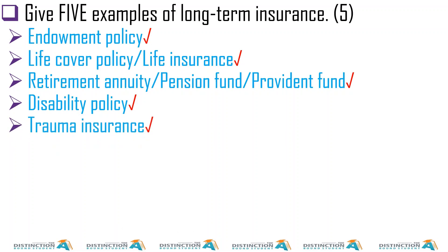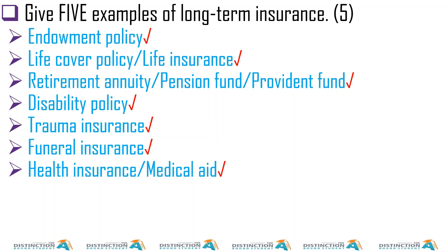Another example is disability policy — it can be long-term. Then there's trauma insurance. Note that a disability policy is something that may or may not happen — it's not definite. Then funeral insurance — that would be assurance because it will definitely happen. And health insurance or medical aid.